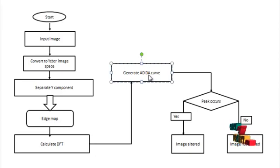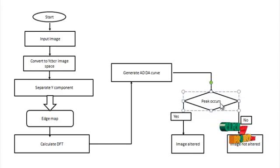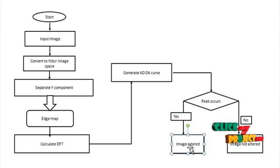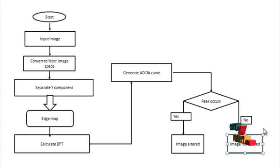Once these two calculations are done, we plot the curve. After that, we calculate the peak value for the AD curve and DA curve. The peak values are calculated and high peak values are separated. If a peak occurs, it displays the message 'image is altered'; otherwise, the image is not altered. The result is determined from the peak values. This is the flow of the project.